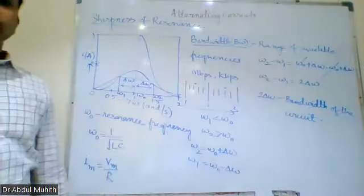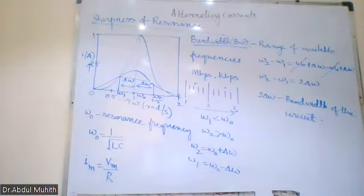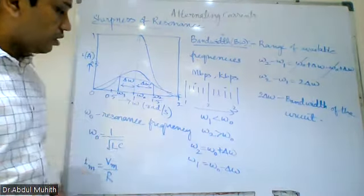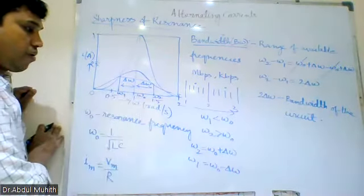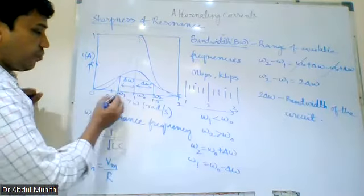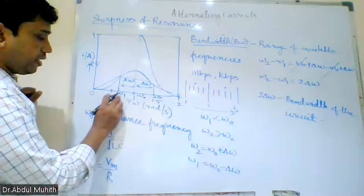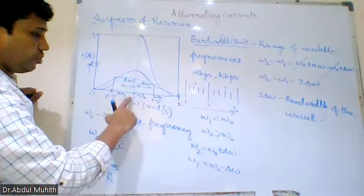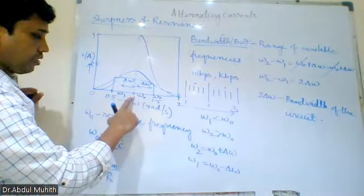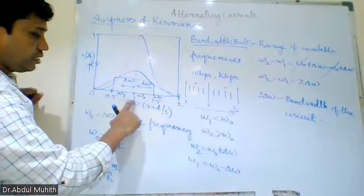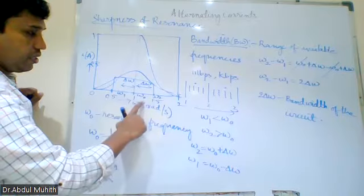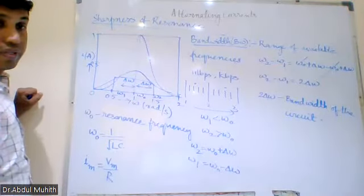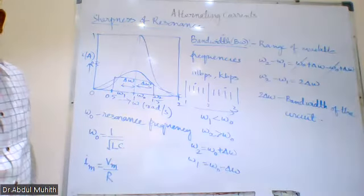A student asks: why do we subtract for ω₁ and add for ω₂? Because ω₁ is less than ω₀. For example, if ω₀ = 1 and Δω = 0.5, then ω₁ = 1 − 0.5 = 0.5, and ω₂ = 1 + 0.5 = 1.5. The difference is 0.5 on each side, giving a total bandwidth of 2Δω.